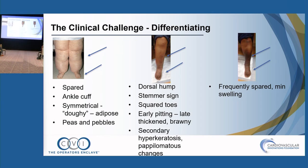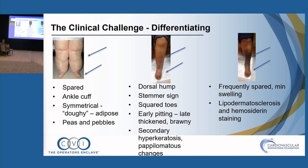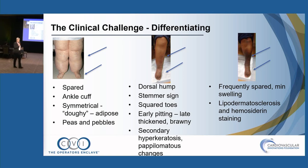As lymphedema becomes more fixed, the skin will be very brawny and indurated. You may see secondary hyperkeratosis, papillomatous changes of the skin. In venous insufficiency, we'll see lipodermatosclerosis and hemosiderin staining — that typical inverted champagne bottle appearance of the legs.